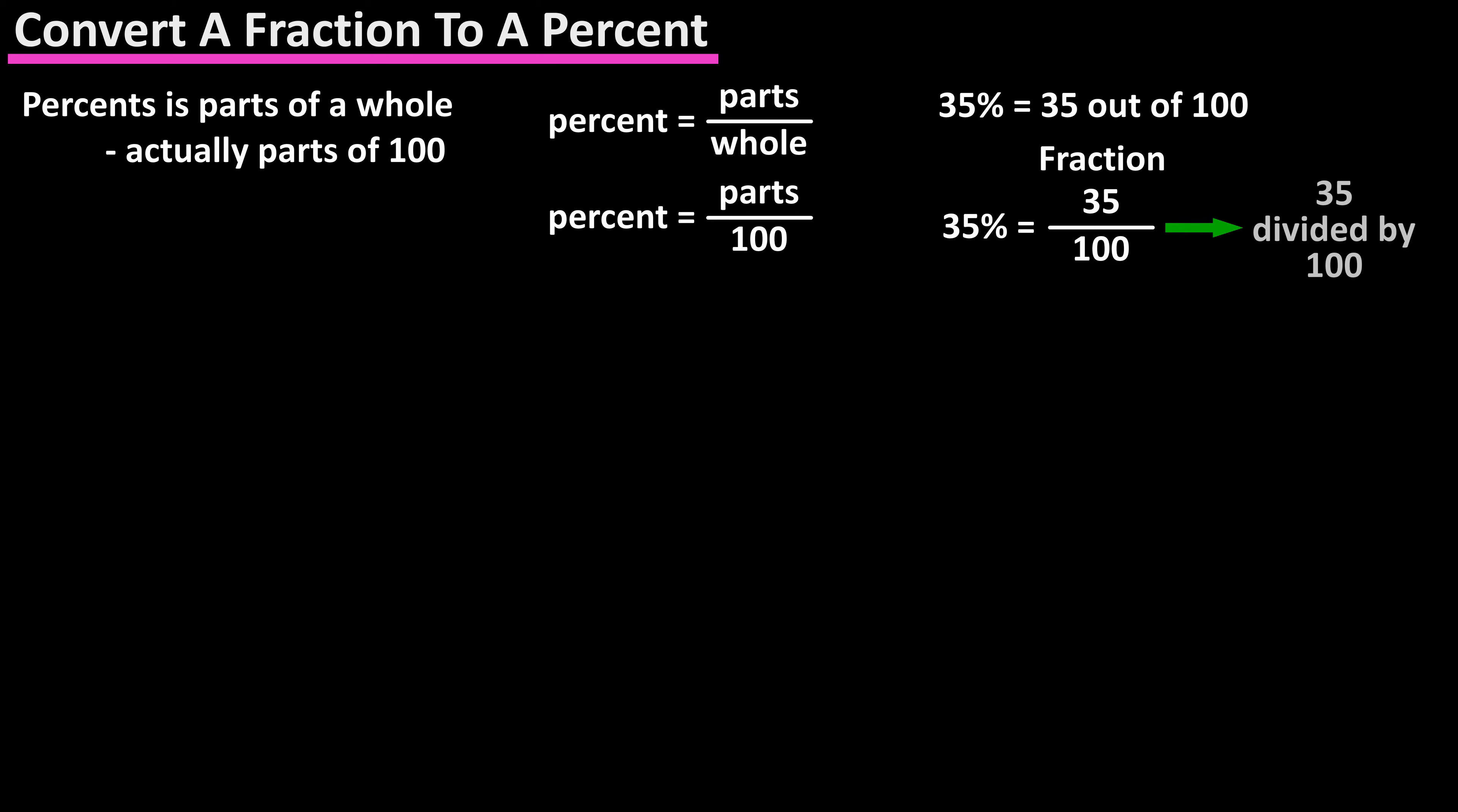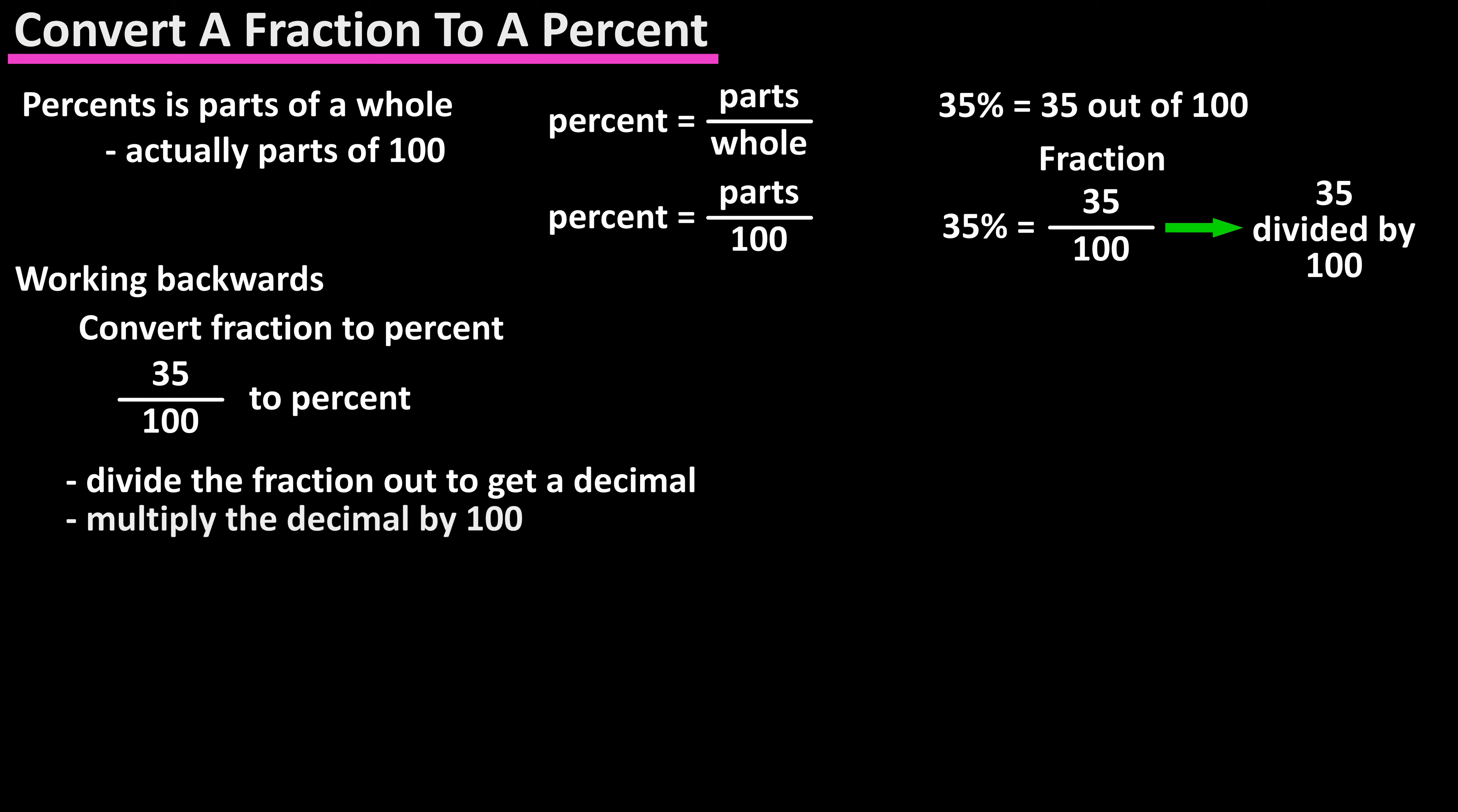We can read this fraction as 35 divided by 100. In order to convert the fraction 35 over 100 to a percent, we can work backwards, and there are three steps to do this. Divide the fraction out to get a decimal, multiply the decimal by 100, and attach a percent sign.